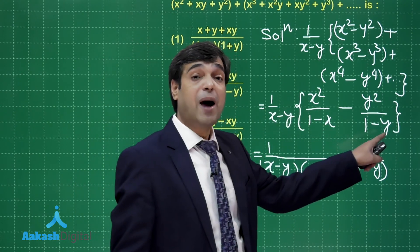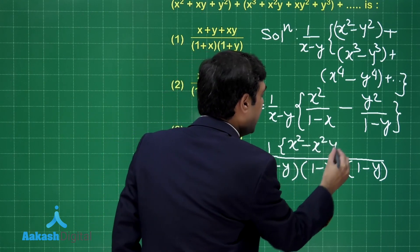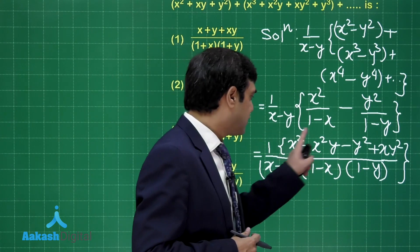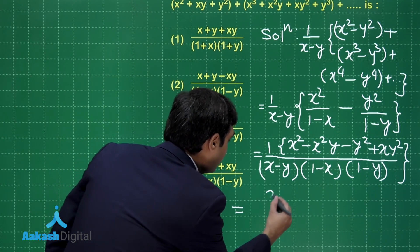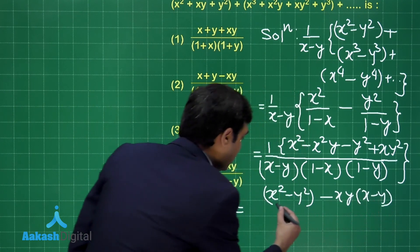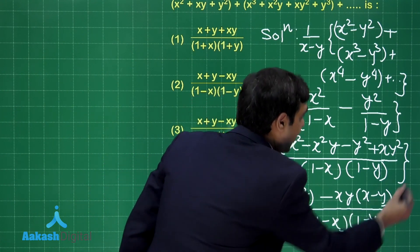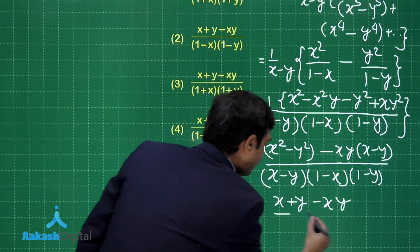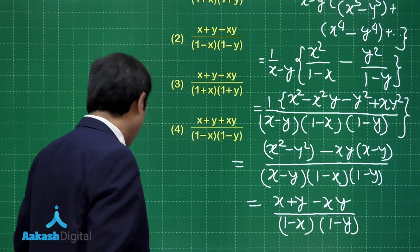The numerator becomes x² minus x²y minus y² plus y²x. We take x² minus y² together and the remaining two terms together to factorize further. This simplifies to (x² minus y²) minus xy(x minus y), all divided by (x minus y) divided by (1 minus x)(1 minus y). The final result is (x plus y minus xy) divided by (1 minus x)(1 minus y).